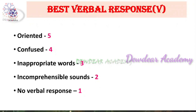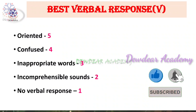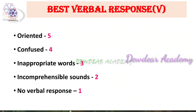Incomprehensible sound scores two, and no verbal response scores one. Best verbal response consists of five components: oriented, confused, inappropriate words, incomprehensible sound, and no verbal response.